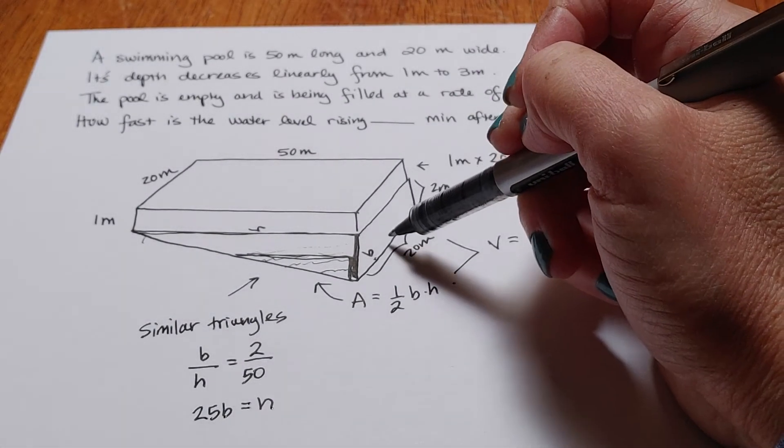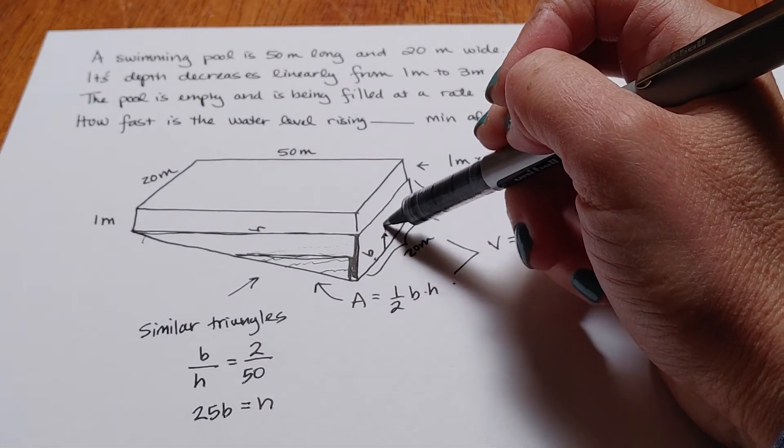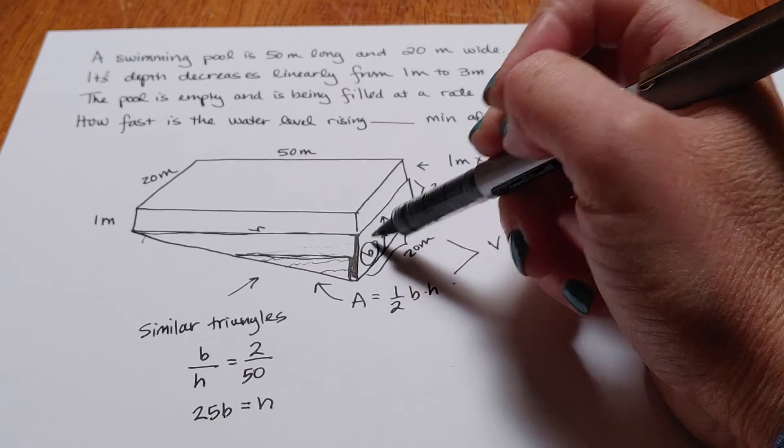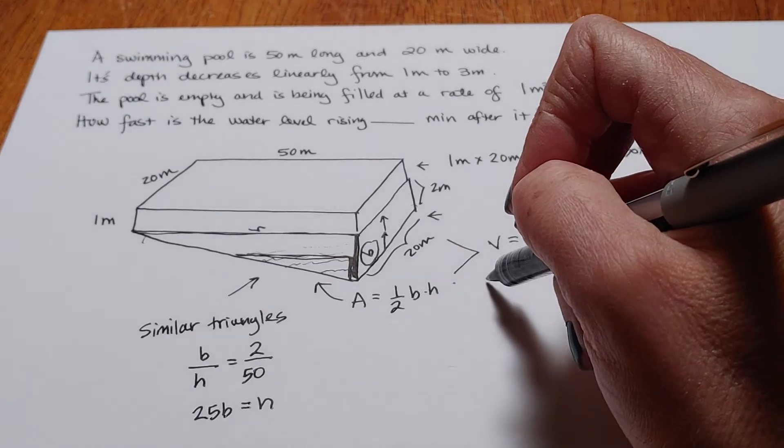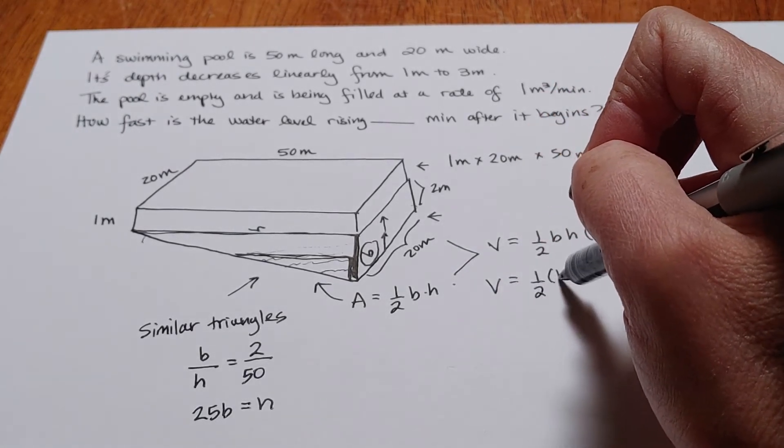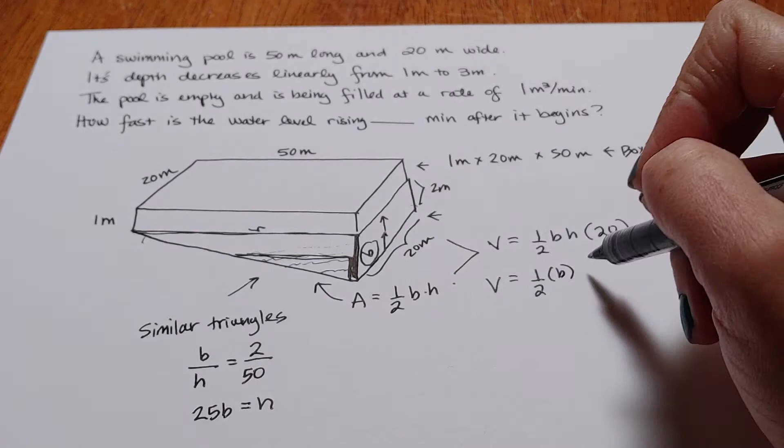Because what we're interested in is the water level rising and that relates to this side, which is B. So I'm going to replace H by 25B.